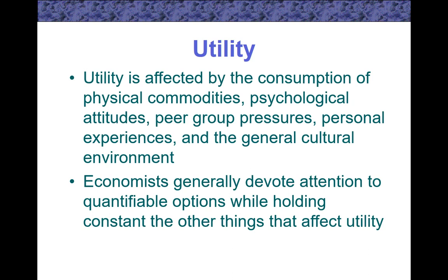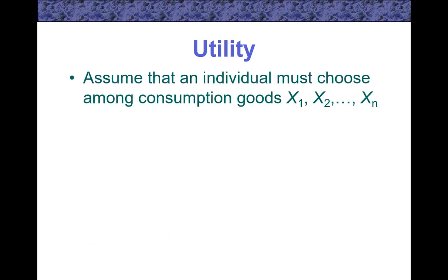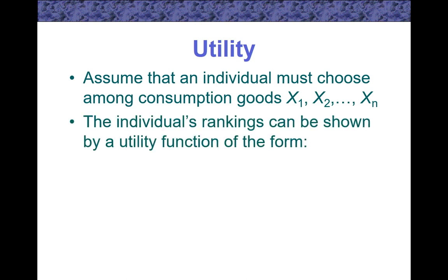Ceteris Paribus Assumption: Assume that an individual must choose among consumption goods X1, X2, ... XN. The individual's rankings can be shown by a utility function of the form: Utility equals U(X1, X2, ... XN).